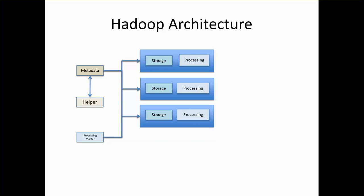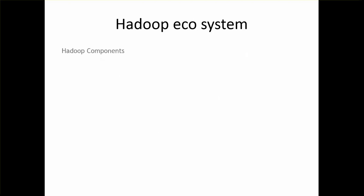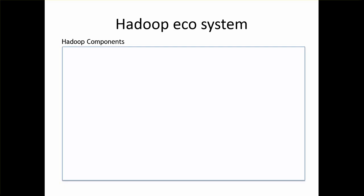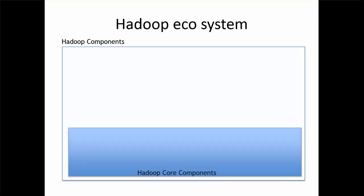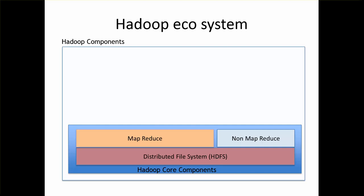In case of Hadoop architecture, as I have explained already, you have storage and processing co-located, and you have masters for storage as well as processing. For storage, we use the Hadoop Distributed File System. For processing, we have MapReduce as well as non-MapReduce based systems. Now we will see the Hadoop ecosystem again. There are many Hadoop components. At the core you have the distributed file system as the foundation, and you have MapReduce as well as non-MapReduce based systems or technologies.